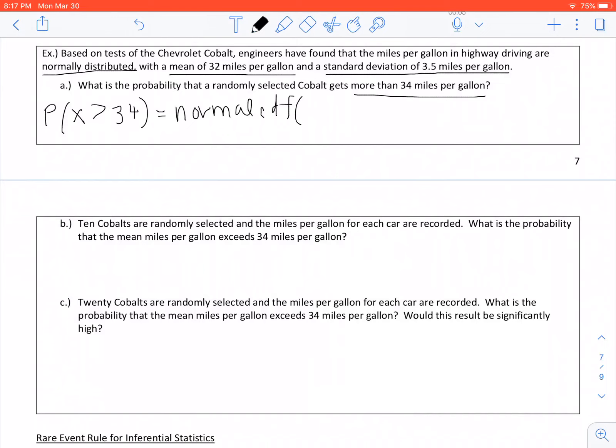With normal CDF, it starts with the lower bound, which here is 34. If it helps to draw a bell-shaped curve, do that. It goes on forever, so that's 1E99—remember that's the E right above the comma. Then our mean, which is 32, and our standard deviation, which is 3.5. Close your parentheses, hit enter. Working this out, we get a probability, and we're going to round it four decimal places: 0.2839.